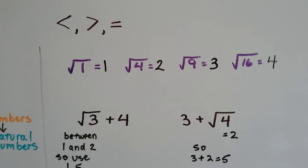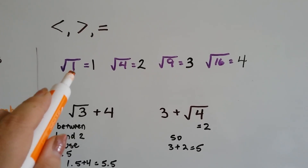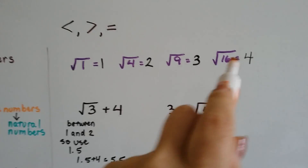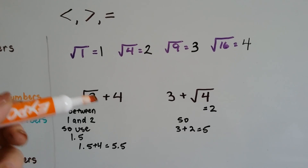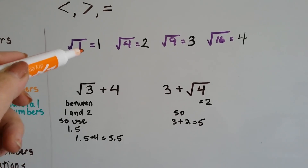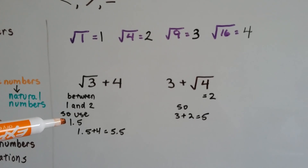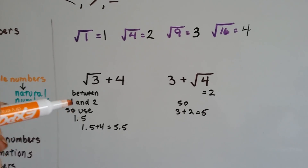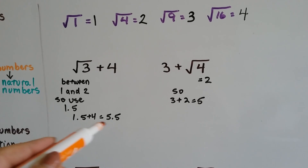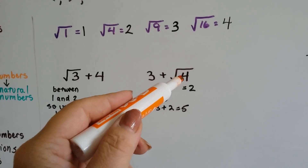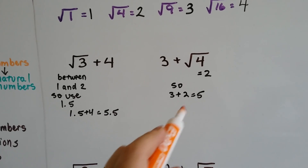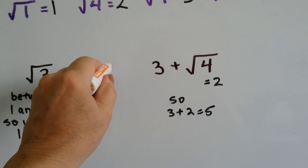For less than, greater than, or equal to comparisons, we use our perfect squares: 1×1=1, 2×2=4, 3×3=9, 4×4=16. Which is greater: the square root of 3 plus 4, or 3 plus the square root of 4? The square root of 3 is between the square root of 1 and the square root of 4, so we approximate it as 1.5, since it's between 1 and 2. 1.5 plus 4 is 5.5. The square root of 4 is 2, so 3 plus 2 is 5. We have 5.5 on one side and 5 on the other, so the left side is greater.